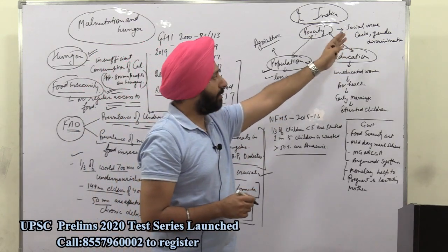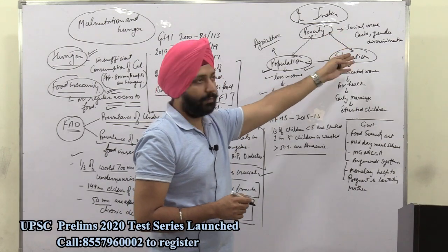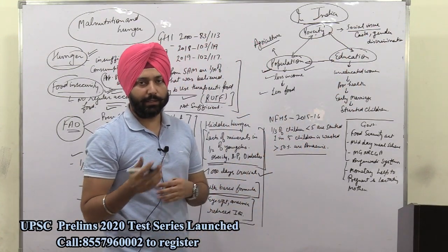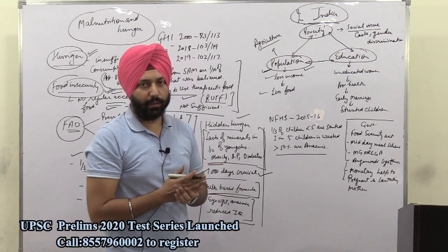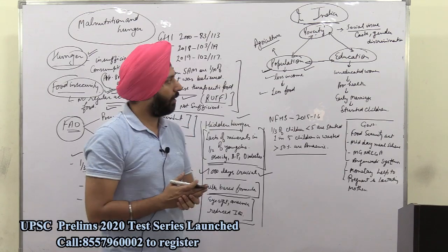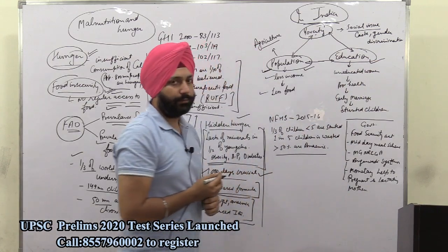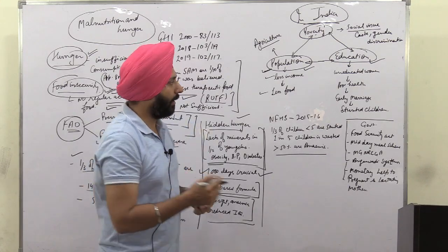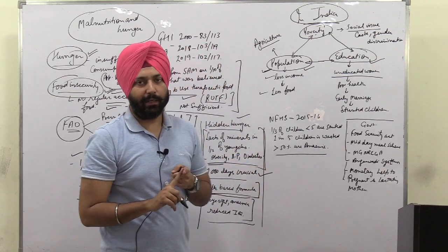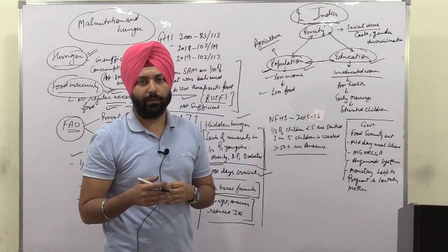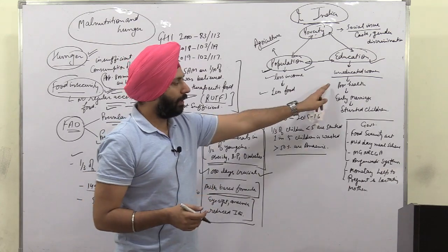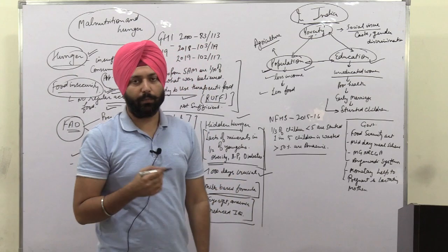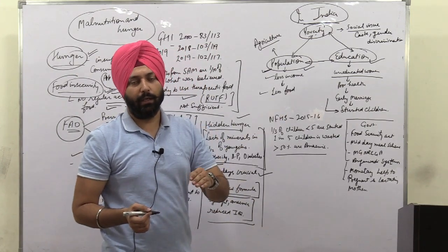Caste-based and gender-based discrimination further worsen the situation. Lower-status groups have reduced accessibility to food. Women suffer greatly in this case — there is less education among women, uneducated women cannot address their health problems, they are mostly anemic, and in patriarchal societies they have less access to food compared to their male counterparts. This leads to poor health, early marriage, and ultimately stunted children — because if the mother is not healthy, the child cannot be healthy.